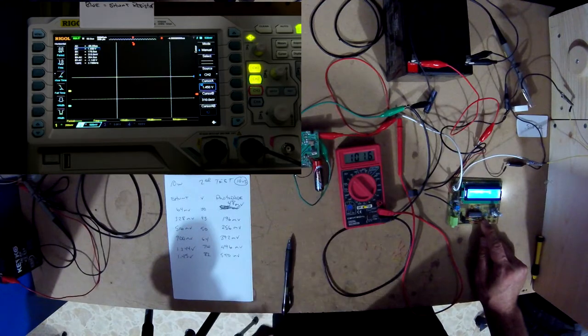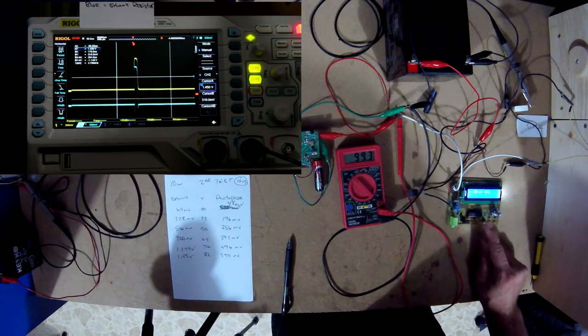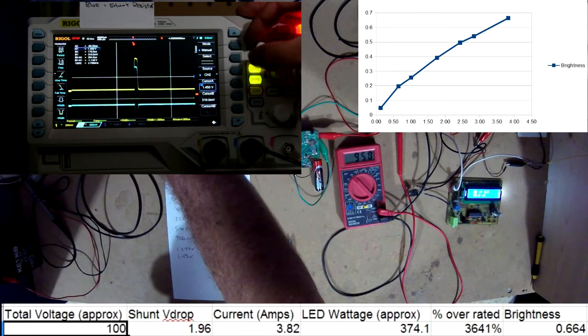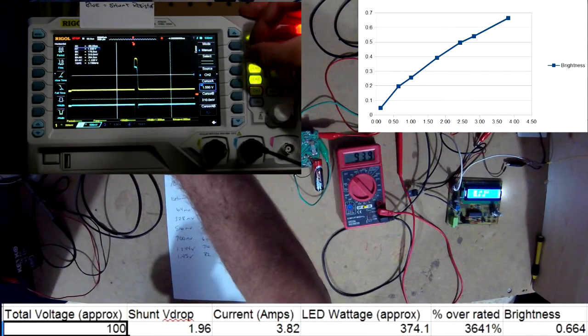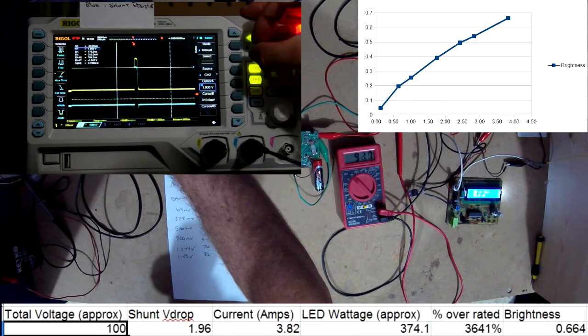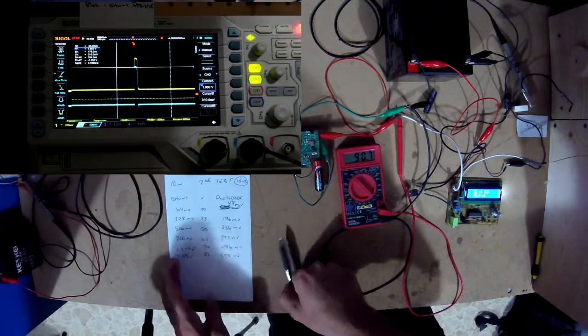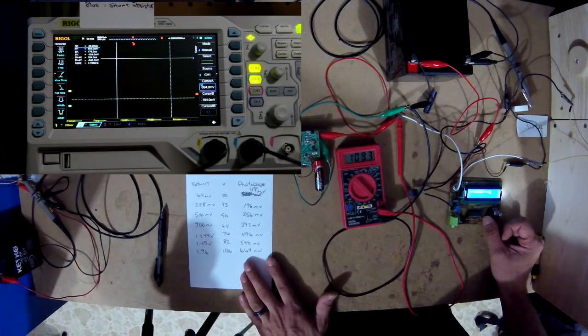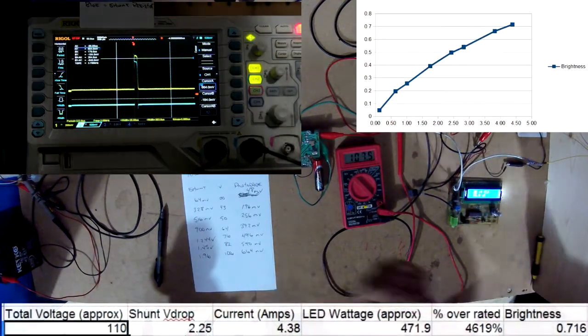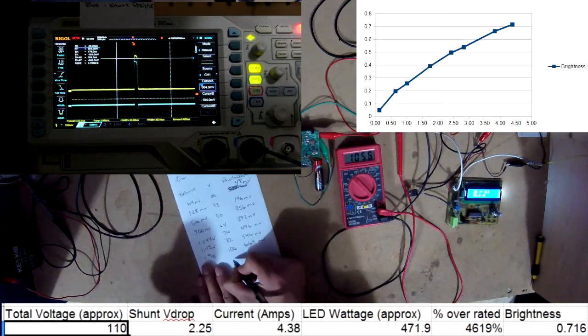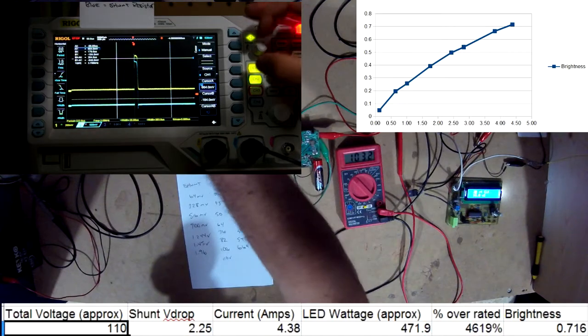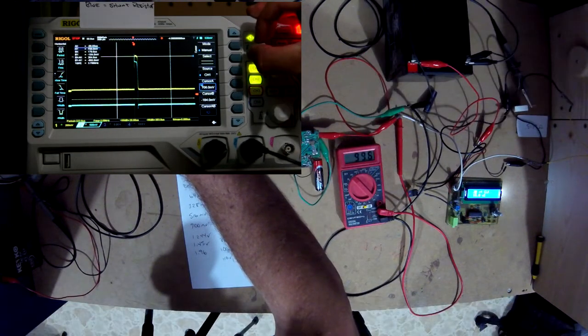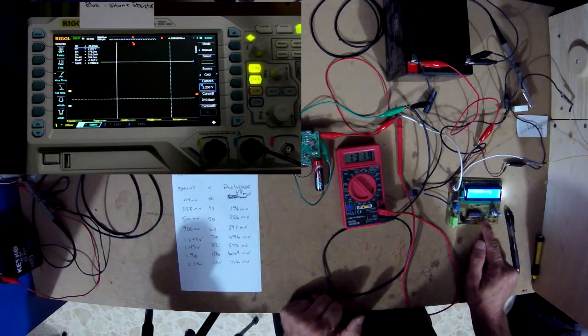Oh, all right, let's do 100. 1.96 volts across the shunt resistor, this is at 100 volts, 110 volts. 130 volts.